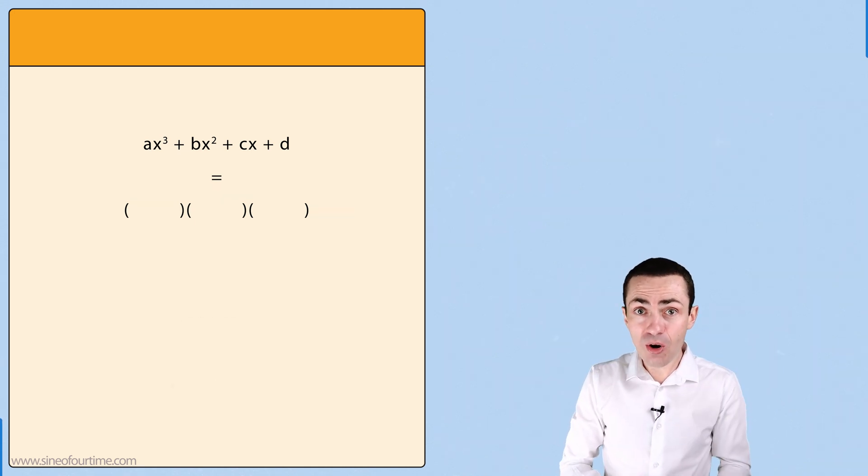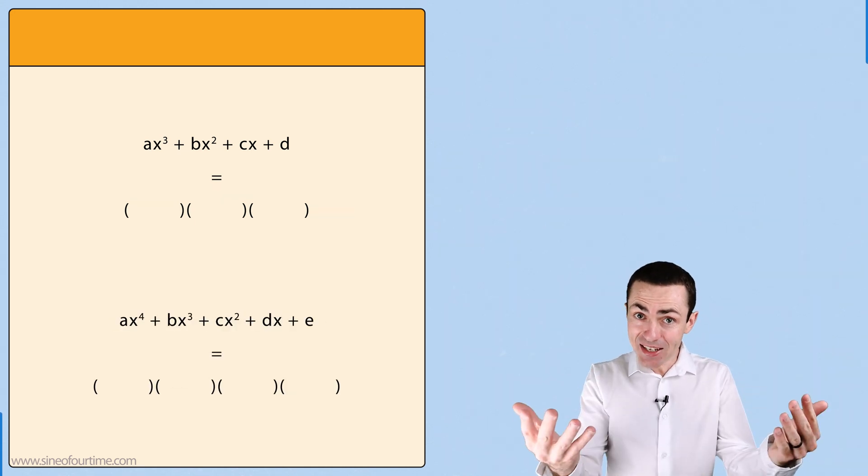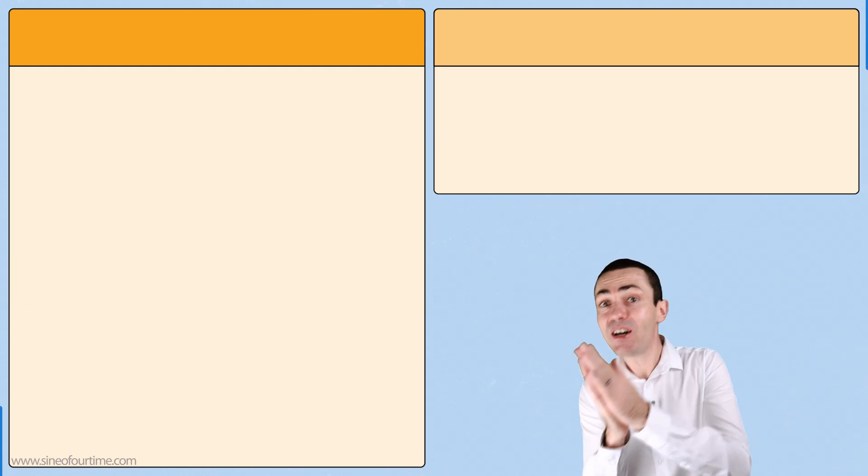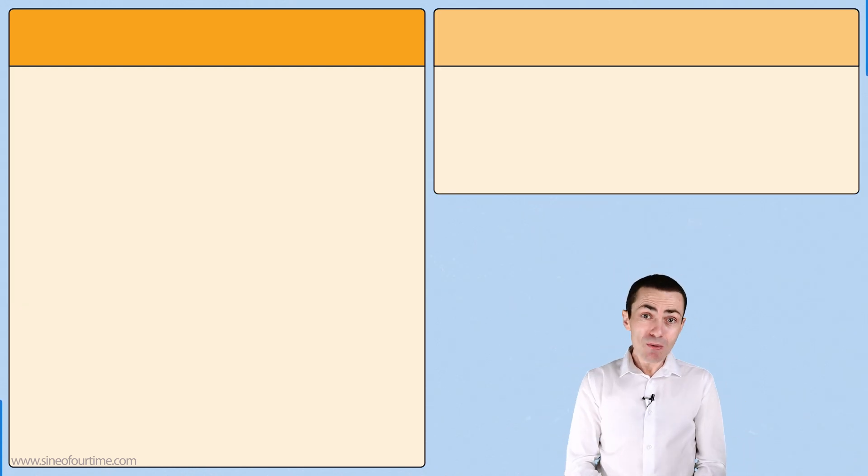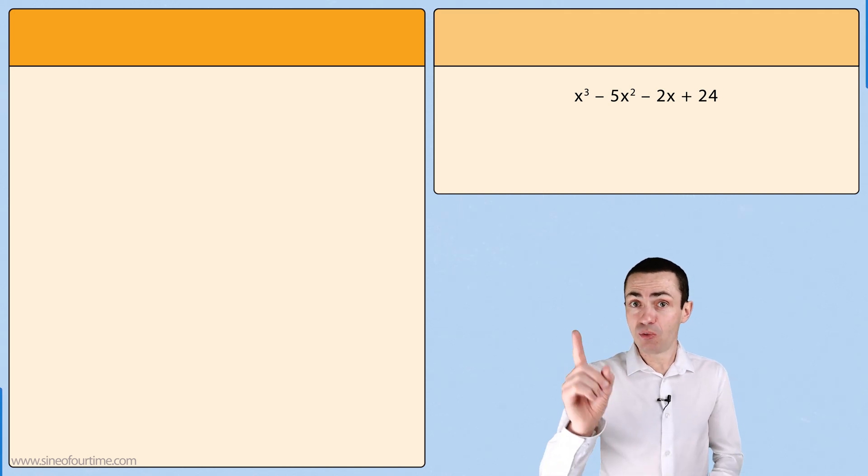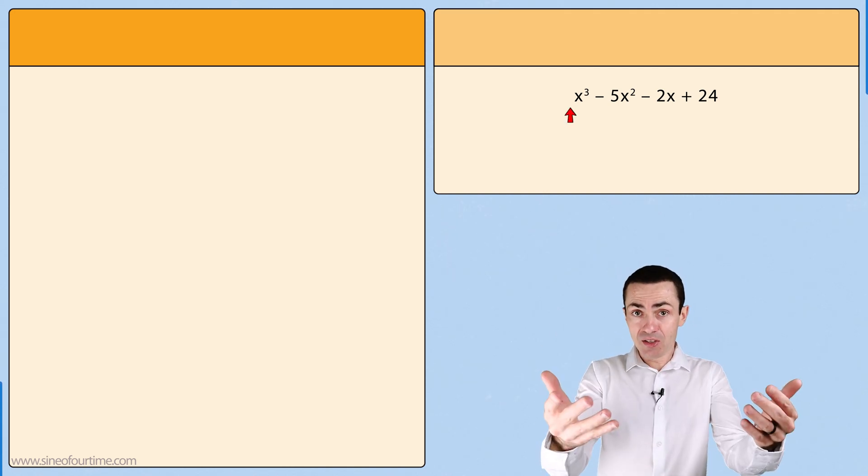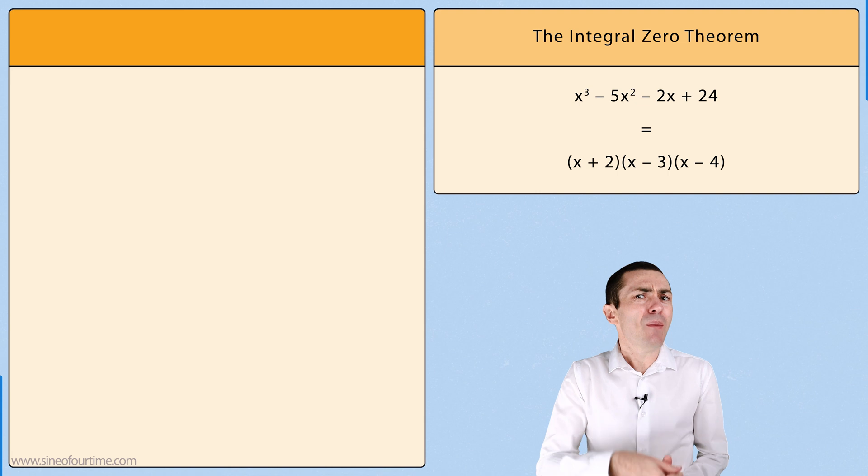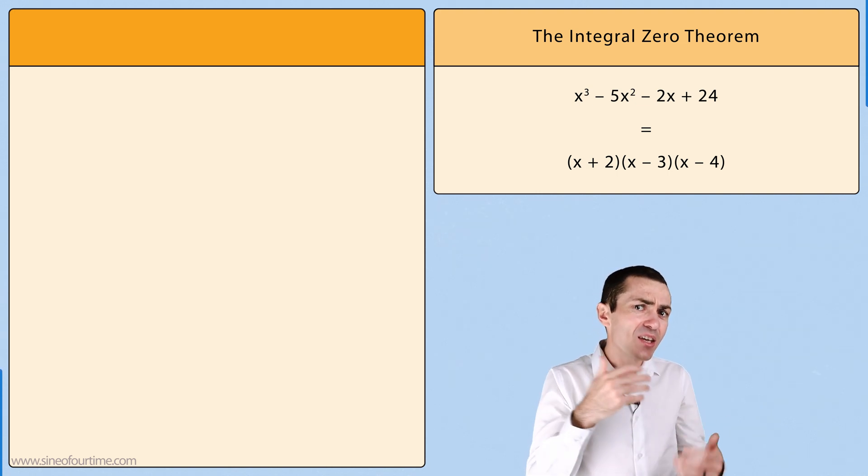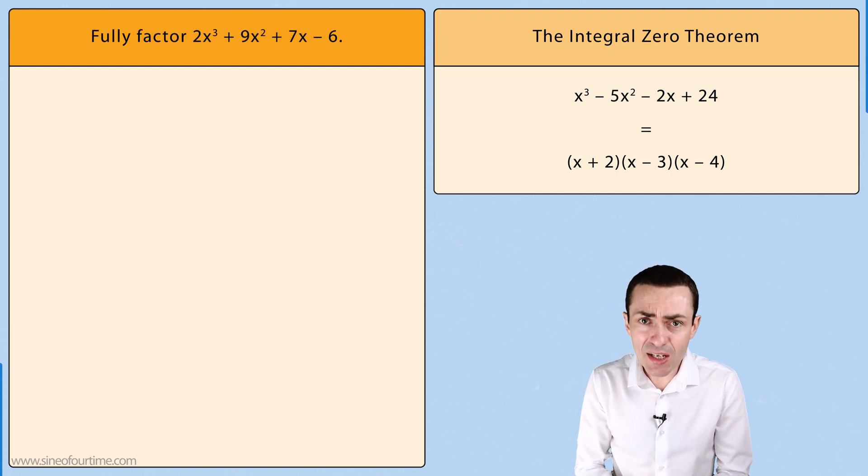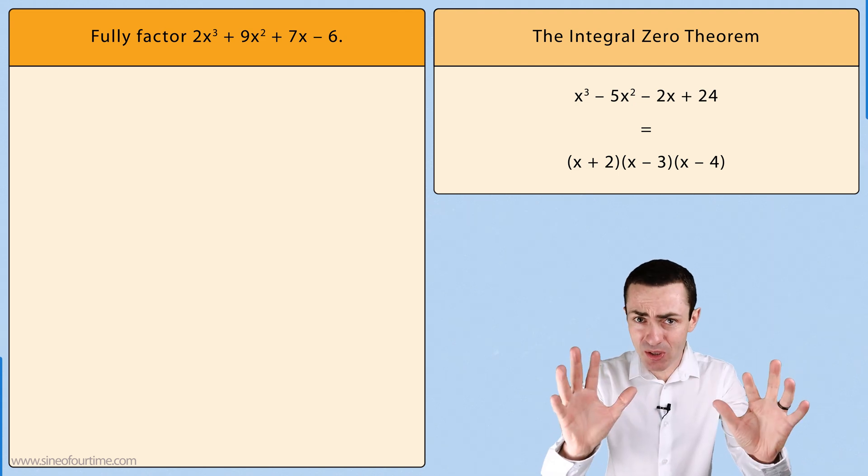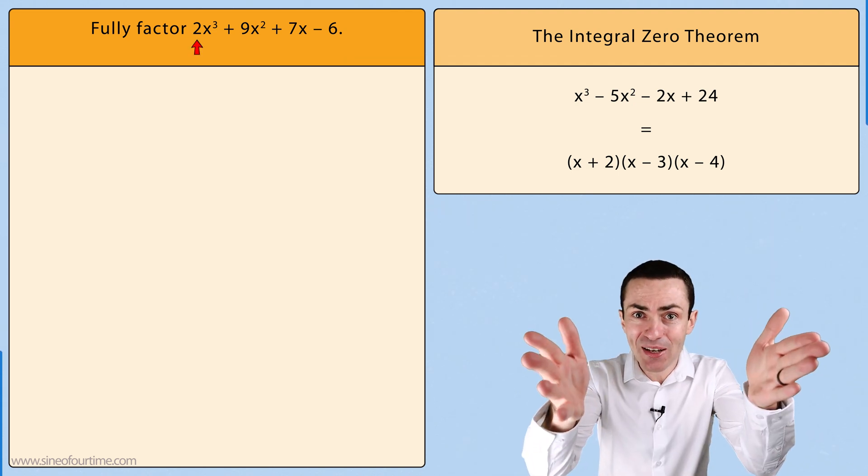quartic polynomials with a degree of 4 and polynomials with even higher degrees. In the last video in this series we were asked to factor a cubic polynomial with a leading coefficient of 1 by using the integral zero theorem. But what if we were asked to factor a cubic polynomial with a leading coefficient that is not equal to 1? Well I'm about to show you.